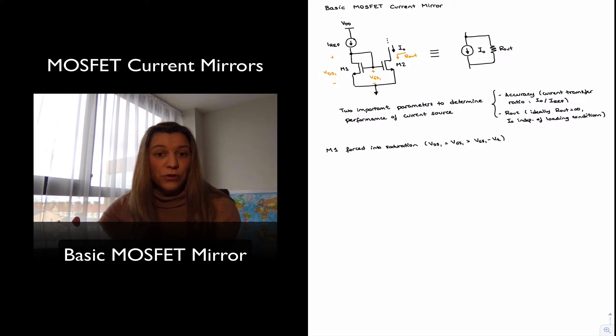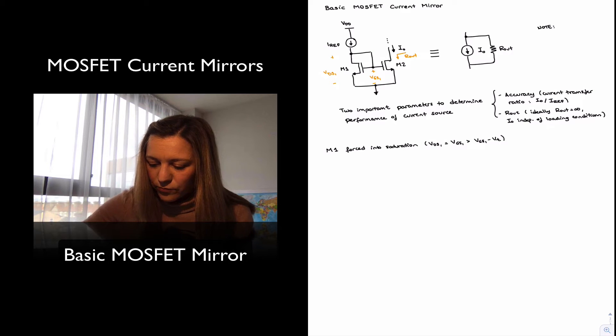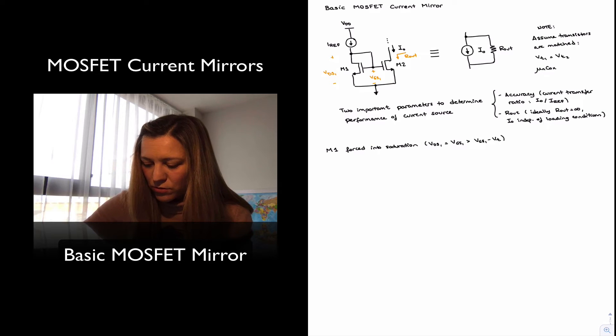I'm going to assume both transistors have the same VT, since I'm assuming good matching. So I'm going to make a note here. Assume the transistors are matched. And what does that mean? Well, that means that VT1 equals VT2, and mu n C ox 1 process parameters equals mu n C ox 2.